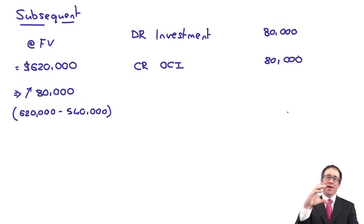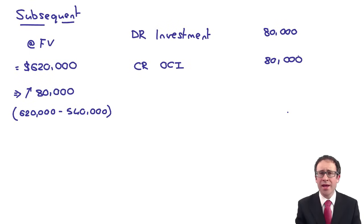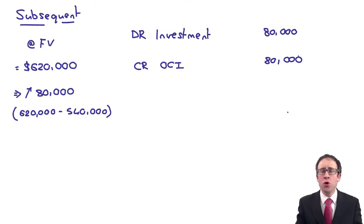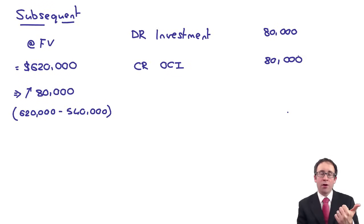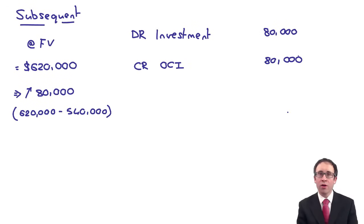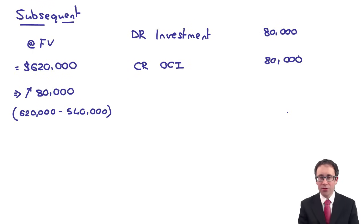That gain will be seen alongside your gain on revaluation of property, plant and equipment. There are two figures seen within OCI at this financial reporting level: gain on property revaluation and gain on your fair value through other comprehensive income investments. If anything doesn't make sense, go back and restart the video.